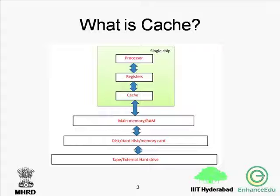The memory is designed to store the program and data of the embedded system. The requirement of the memory is that it should be cheap and fast. However, low cost memories are rather slow. So there is a trade-off between the cost of the memory and the speed of the memory. The answer to this is we need to build a memory hierarchy. In a single chip, there can be the processor, registers, or the cache memory.